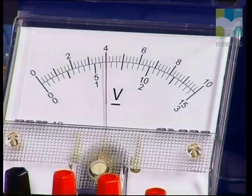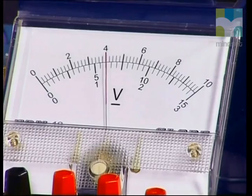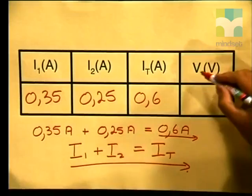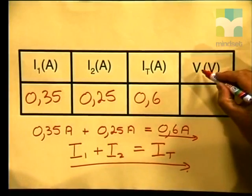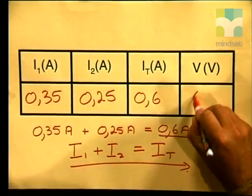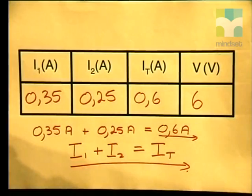If I close the switch, and using the middle scale, I can see that my voltmeter is measuring 6 volts. The potential difference across the entire parallel combination was 6 volts.